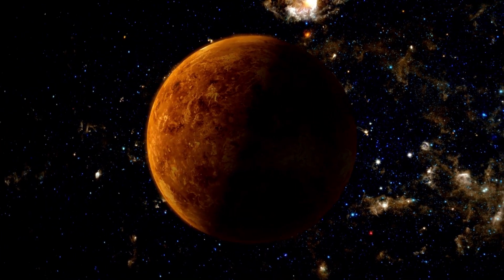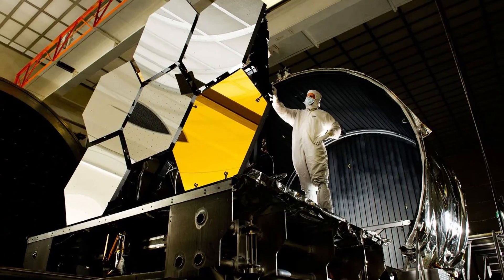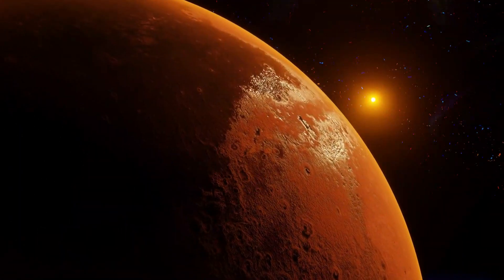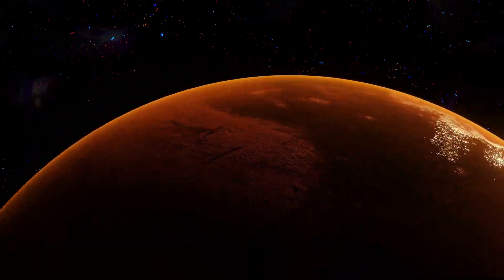Using the James Webb telescope's special MIRI instrument, they spotted water near the center of the planet-forming disk surrounding PDS 70. Imagine a hot vapor at a toasty 625 degrees Fahrenheit.